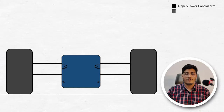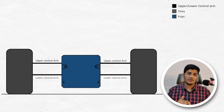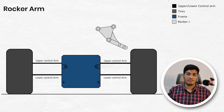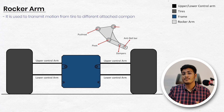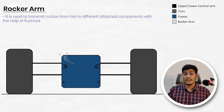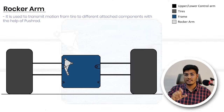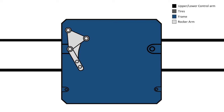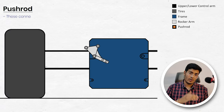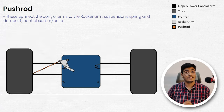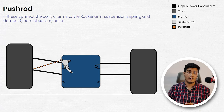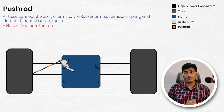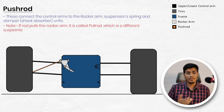Here in this diagram you can see we are having an upper control arm and a lower control arm. This gray part is the rocker arm. It is used to connect various components such as the pushrod, springs, and damper. This rocker arm is pivoted to the frame of the vehicle through this point and it can rotate. A rod is connected between the lower control arm and the rocker arm. As the tire moves up, the rod will push the rocker arm inside and the rocker arm will rotate. As the rod is pushing the rocker arm, it is called the pushrod.